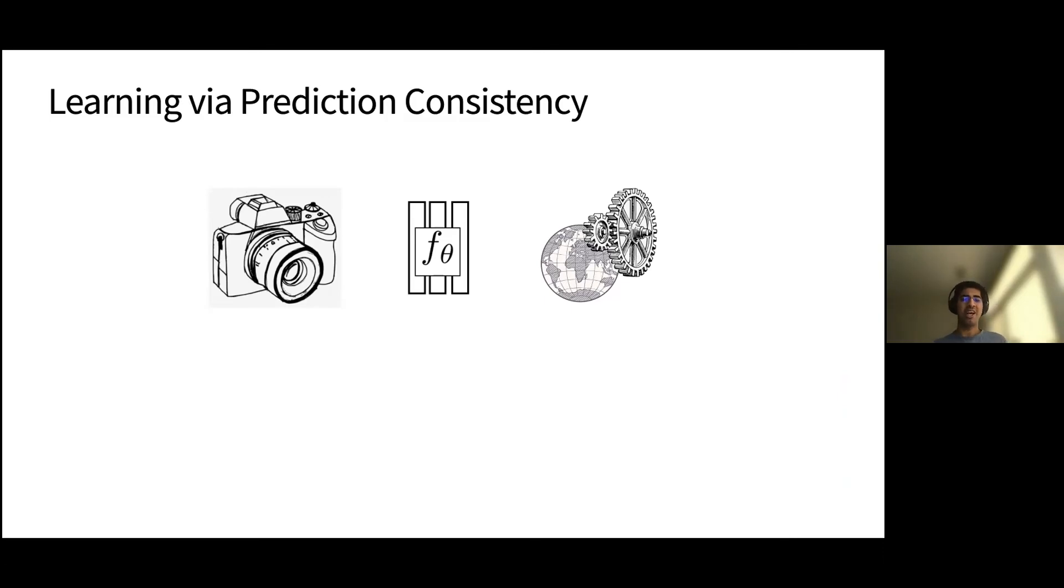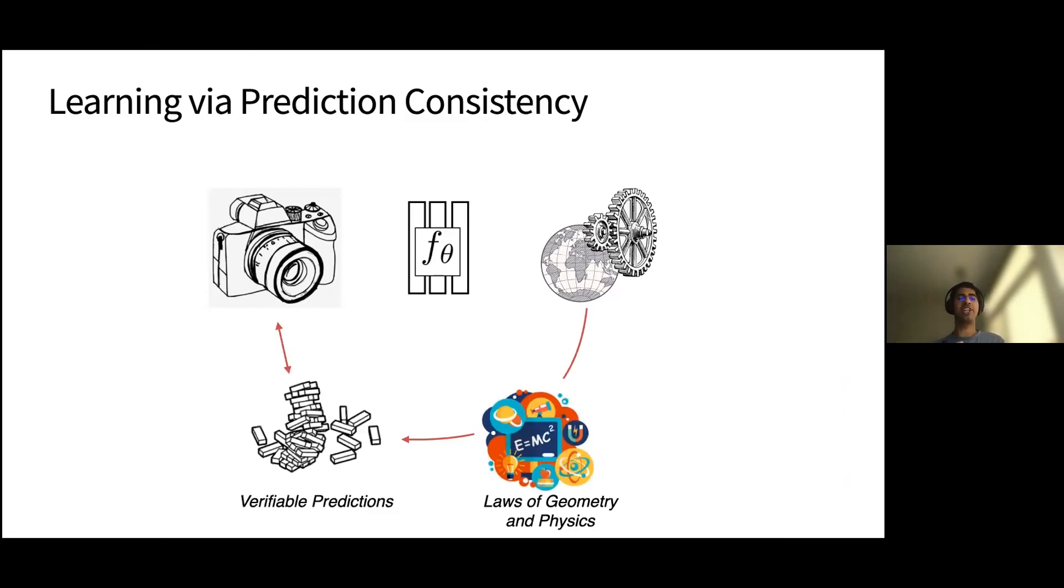And what I mean by that is, as you're inferring some physical models of the world, we know that these models obey the laws of geometry and physics. And this can let us make certain predictions. For example, how does the world look if I move around? Or how does the world change if I apply a force? And just by enforcing that these predictions match what we observe, we can learn without using any human annotations. And all of the applications that I showed you earlier were in fact enabled by a system learning on its own by just watching and using the laws of physics and geometry.